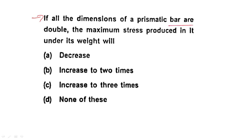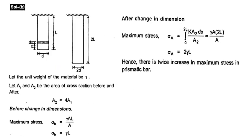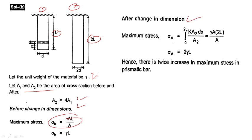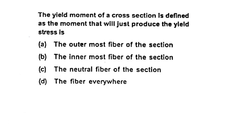Next question: If all dimensions of a prismatic bar are doubled, the maximum stress produced under its own weight increases by two times. Comparing stress before and after doubling dimensions — using unit weight and cross-sectional areas A1 and A2 — shows the maximum stress doubles.